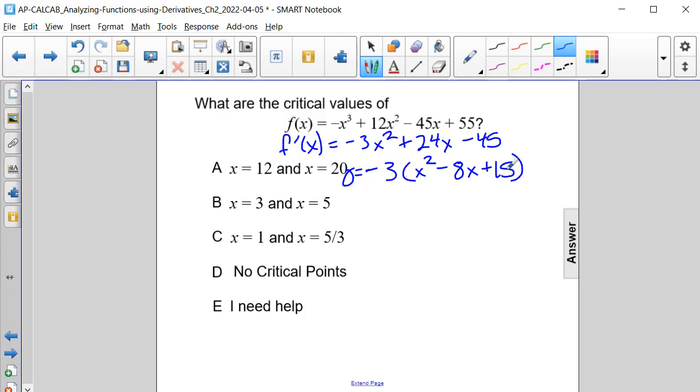And now, are there factors of positive 15 that add up to negative 8? Absolutely. Negative 3 and negative 5.